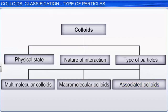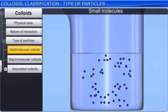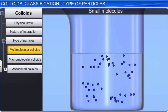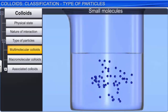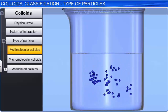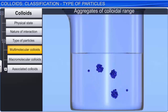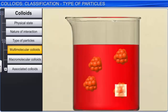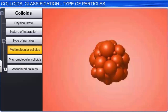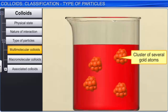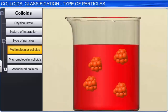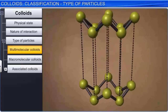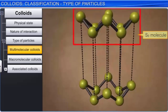Multimolecular colloids are formed when a large number of atoms or smaller molecules of the dispersed substance aggregate together to form a species whose size lies in the colloidal range. For example, a gold sol consists of particles of various sizes that are a cluster of several gold atoms. A sulfur sol consists of colloidal particles that are aggregates of S8 molecules. These molecules in the aggregate are held together by Van der Waals forces.